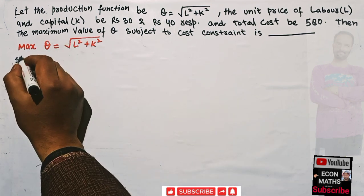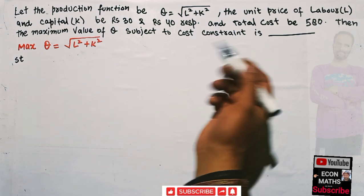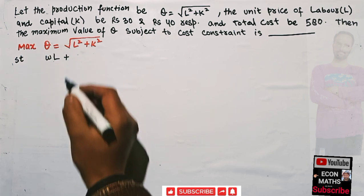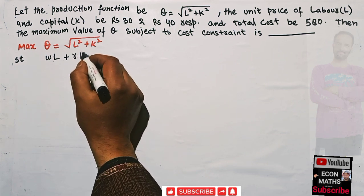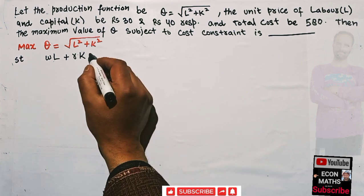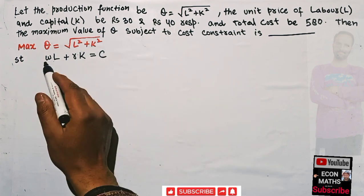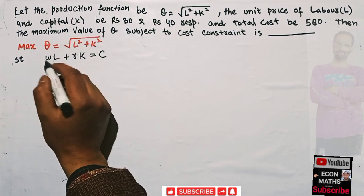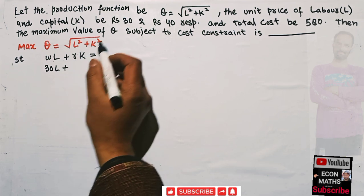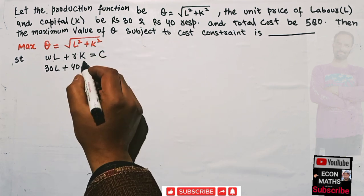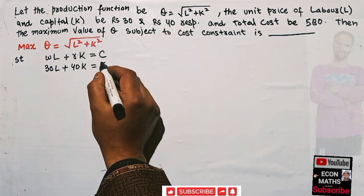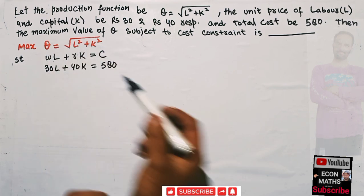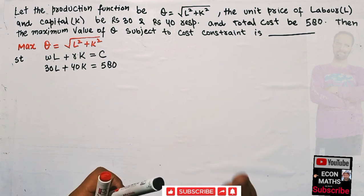Subject to the cost constraint. The cost constraint is simply: wage rate times number of laborers employed, plus rental cost of capital times units of capital employed, equals total cost. The unit price of labor is 30, so we have 30l; unit price of capital is 40, so 40k equals total cost of 580. We want to maximize q subject to this constraint.